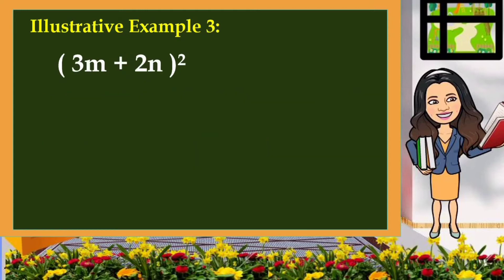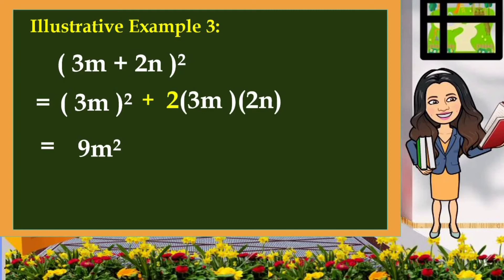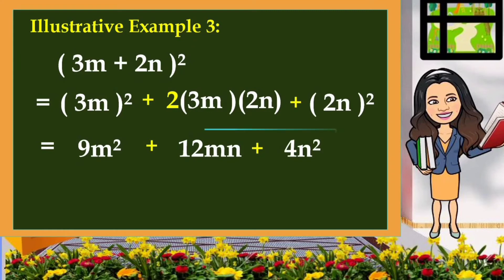Another example: the square of the quantity 3m plus 2n. Using the same process — square the first term, which is 3m: that is 9m squared. Then twice the first and the last term: 2 times 3m times 2n, that is 12mn. And the square of the last term, which is the square of 2n: that is 4n squared. So the result of the square of the quantity 3m plus 2n is 9m squared plus 12mn plus 4n squared.